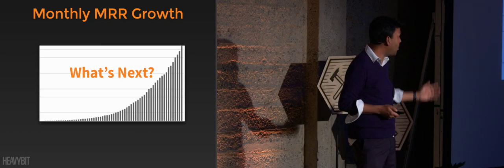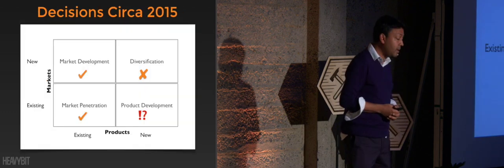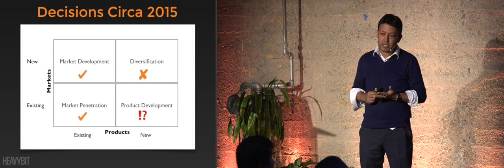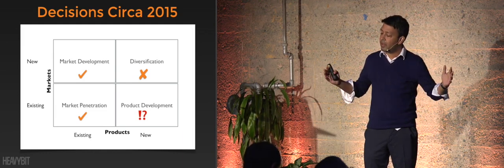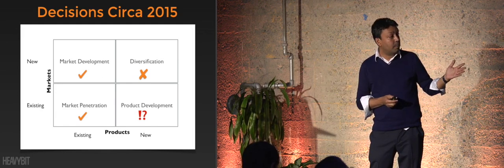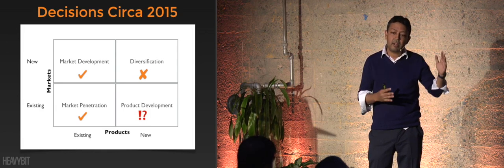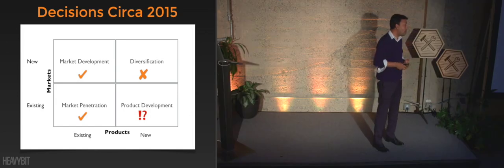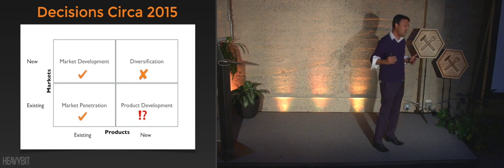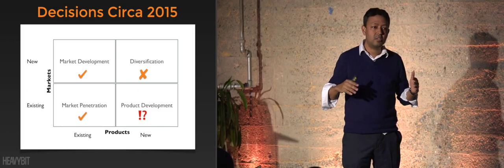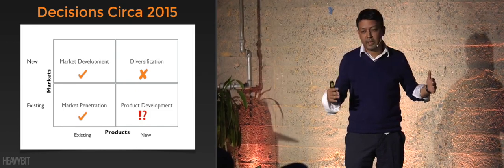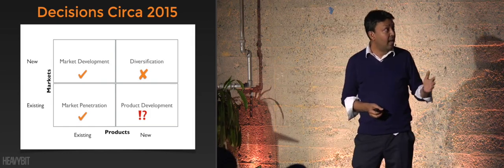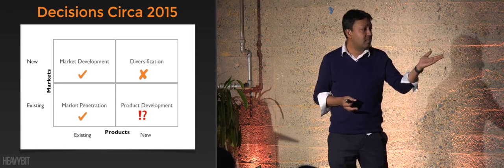In the case of Datadog, this is what we were wondering about in 2015. Everything was growing really well, sales was going gangbusters, marketing was doing well, we were generating leads, and everything was going in the right direction. CAC was great, LTV was great. But we had to think about whether, if we keep doing what we're doing, we'll plateau out — and whether we could leverage everything we'd built around sales and marketing to generate more.